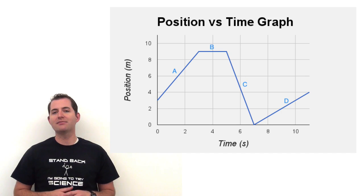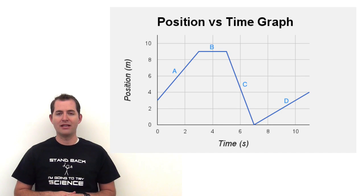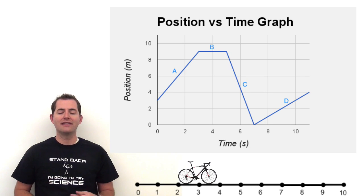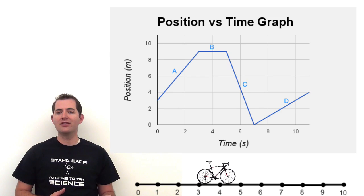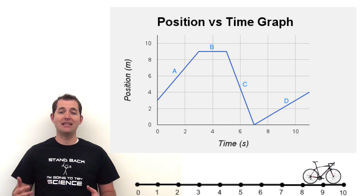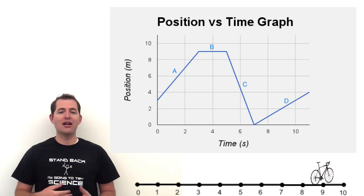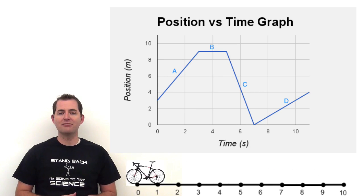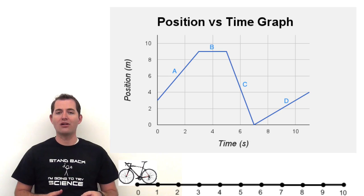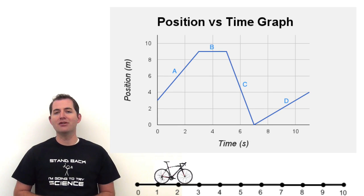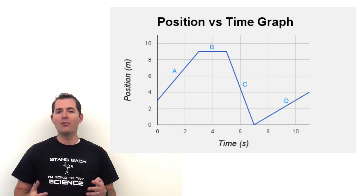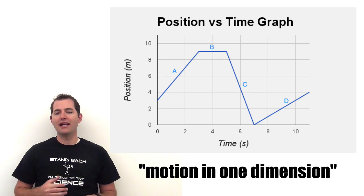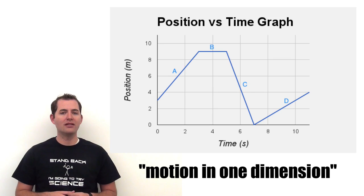Let's look at a motion that would fit this position versus time graph. For example, a bicycle that starts at three meters away from a point we've determined to be zero. That bicycle would then move in three seconds from three meters away to nine meters away. It would be stationary for two seconds. Then it would turn around and go the opposite direction, nine meters back to what we've identified as our origin. Then it turns around again and in four seconds moves four meters away. This shows what we mean by motion in one dimension — the bicycle is moving only back and forth, not up a hill or anything of that sort.